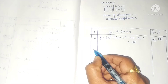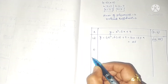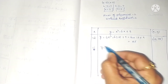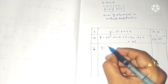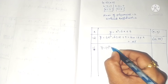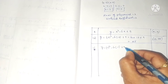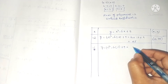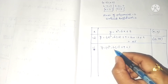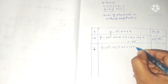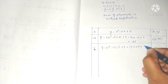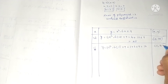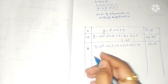Next, take x = -1: y = (-1)² - 6(-1) + 9. That is 1 + 6 + 9 = 16. So the point is (-1, 16).